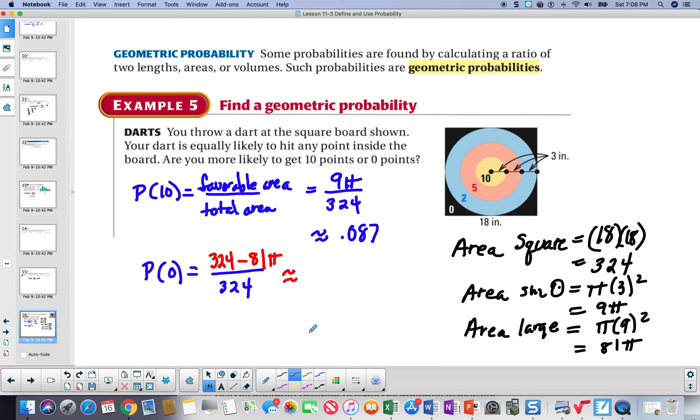And the answer is 0.215. So, the question is, are you likely to get 10 points or 0 points? And the answer is, you're likely to get 0 because that has a greater probability than you trying to get the target inside.